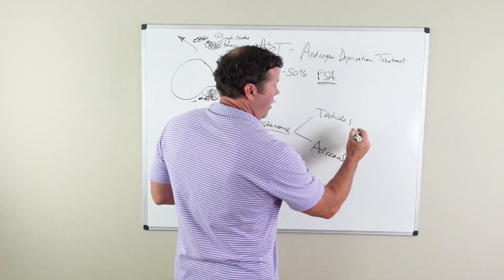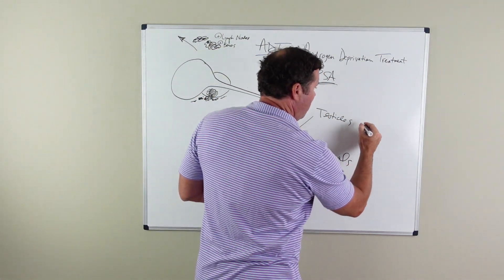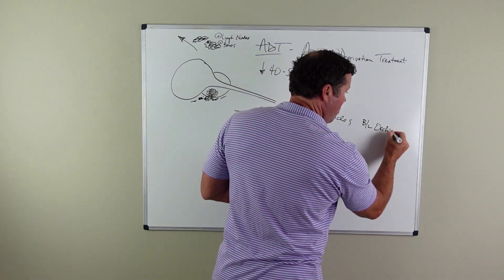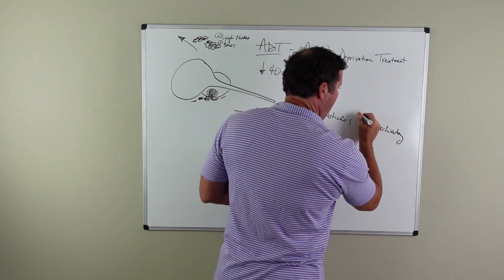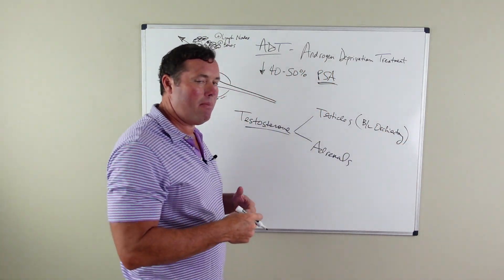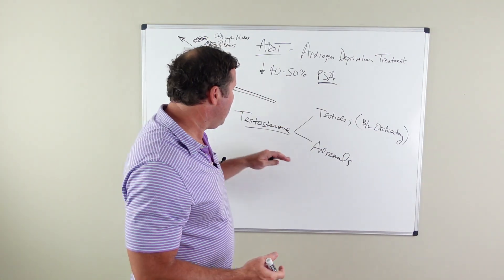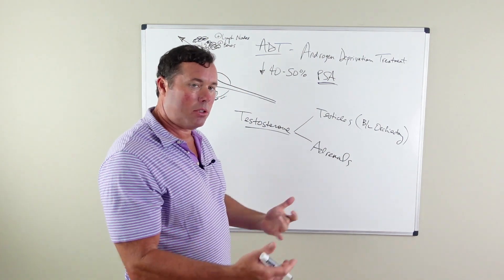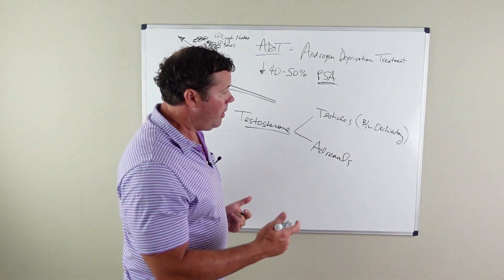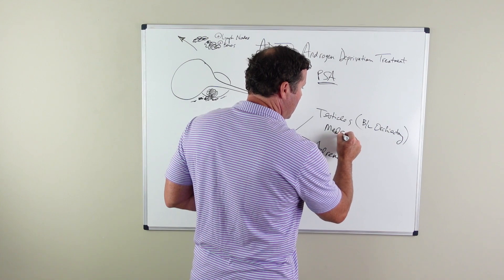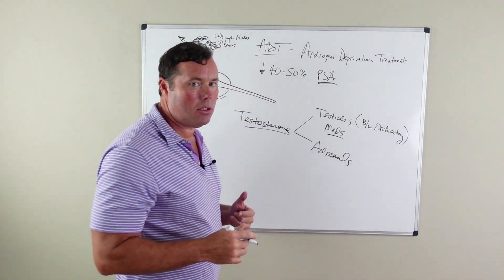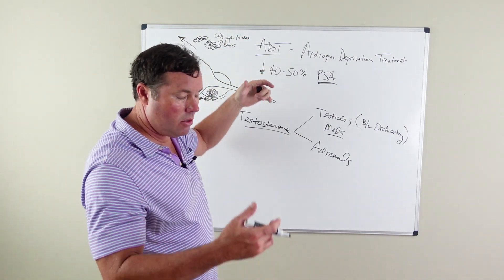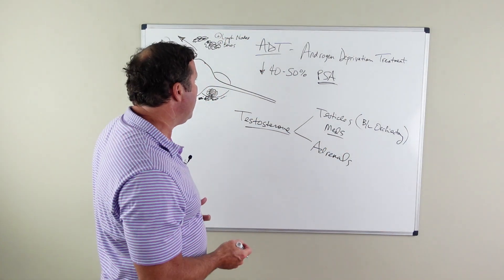Now this can be done a couple of different ways. One way ADT can be performed is by a surgical procedure. You can simply remove the testicles, and what this does is provide immediate decrease of testosterone, usually within hours of having this procedure performed. There's also medications, injections or oral medications that can be given to lower this testosterone in treatment of advanced or metastatic prostate cancer.